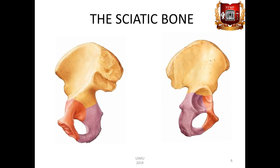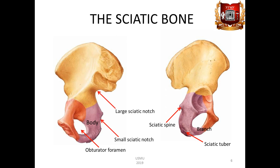The sciatic bone, os ischi, has a thickened body, which in front passes into the branch of the ischium, ramus osis ischi. The branch connects to the lower branch of the pubic bone and delimits the obturator foramen, foramen obturatum. At the junction of the body with the branch is the sciatic tuber, tuber ischiaticum. There is a sciatic spine, spina ischiaticum, above, which separates the large and small sciatic notches, incisura ischiaticum majus et minus.